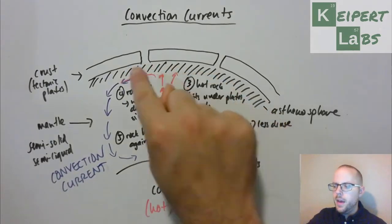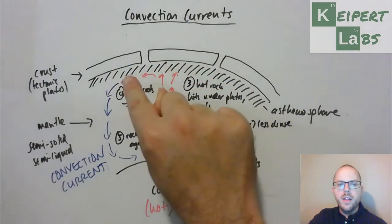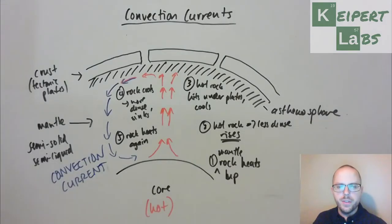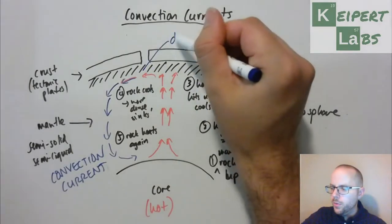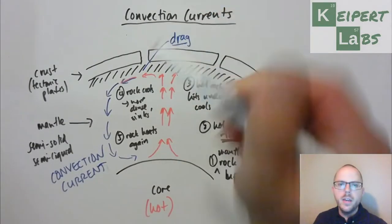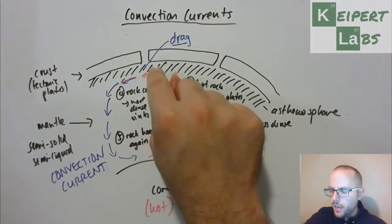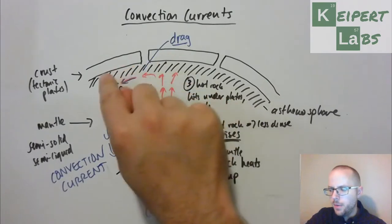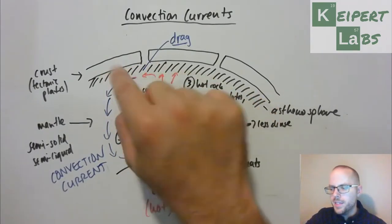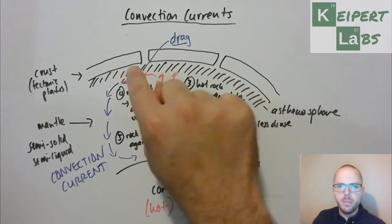But the reason that we care about this is not only because science is awesome but also because it's what happens up here, at the very top layer, that really makes the difference. Because what happens up here is that we get what's called drag. As this rock gets up to this part that we call the asthenosphere, which is where it starts to actually make contact with the tectonic plates.